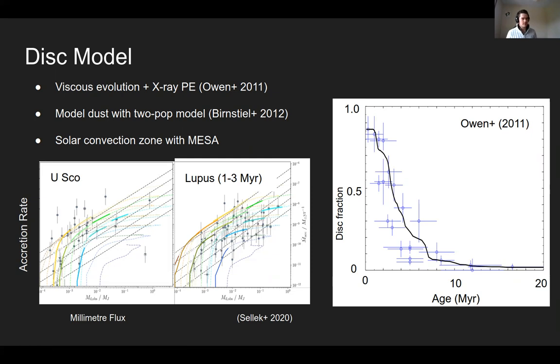So essentially, we use these models to get the accretion rate onto the stars, which we then couple to a model of the solar convection zone to work out what the abundances at the stellar surface are. And we can use that to essentially test different hypotheses about where the rocky material has gone.